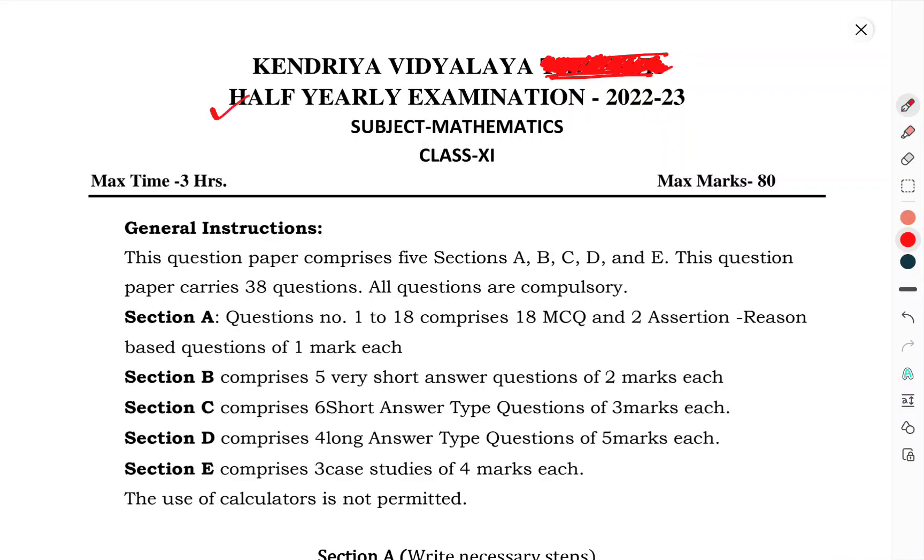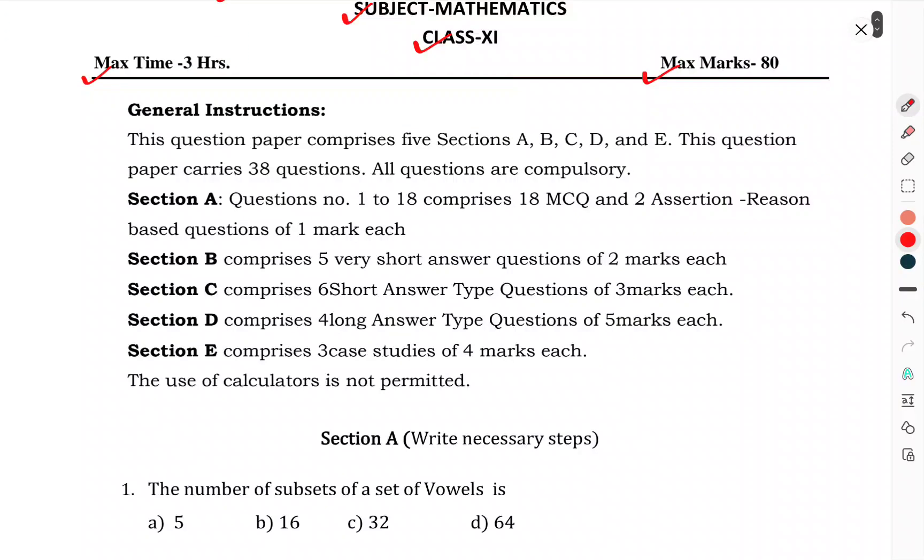Now basically we will talk about the half yearly examination, subject mathematics, class 11th. This is the half yearly question paper for class 11th mathematics. Let's start. First of all, max time is 3 hours, max marks 80. We have to see the general instructions. This question paper comprises five sections: A, B, C, D, and E. This question paper carries 38 questions.